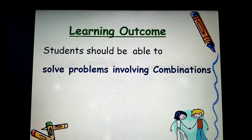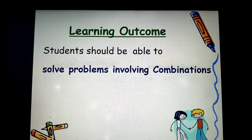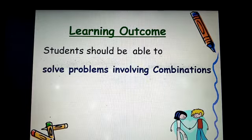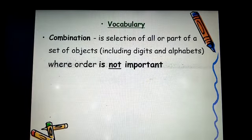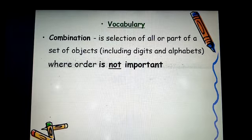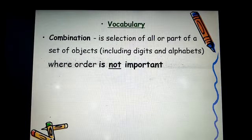Today, we are looking at how to solve problems involving combinations. What is combination? It's a selection of all or part of a set of objects, including digits and alphabets, where order is not important.